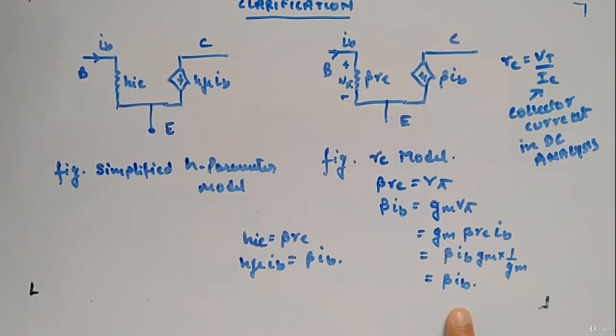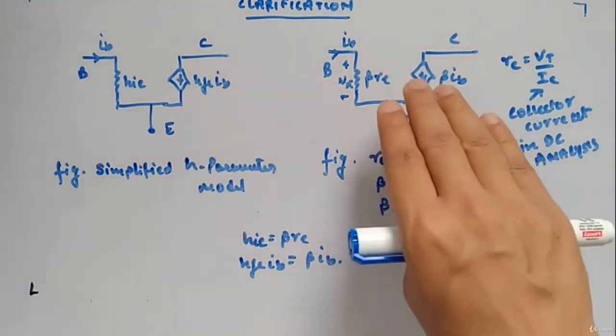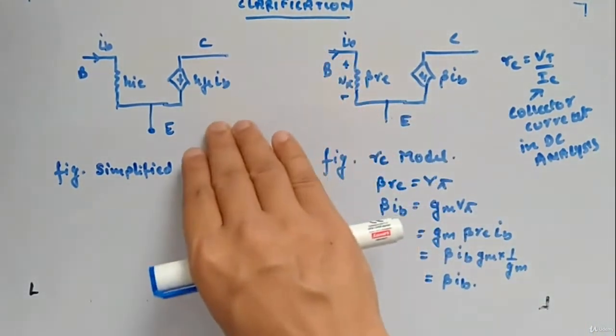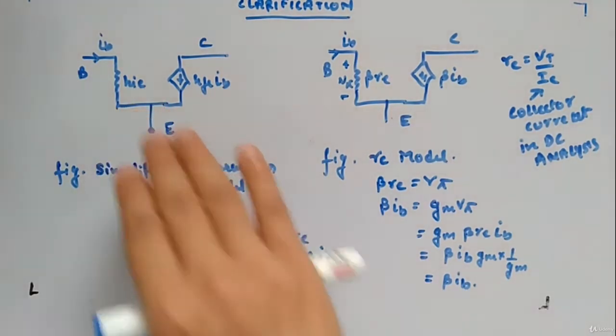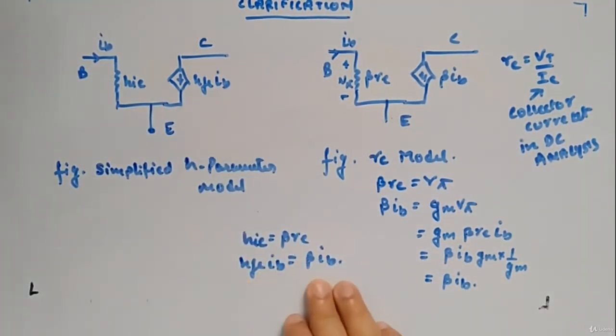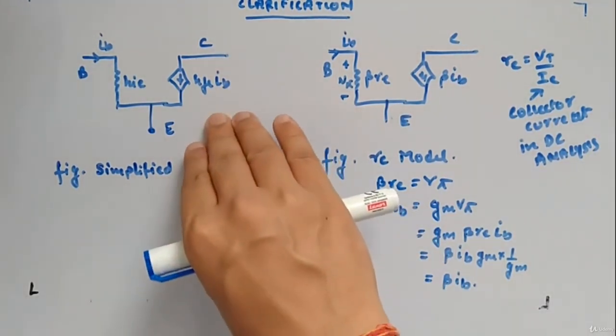This is about re model. Now the clarification is they both are the same. So hie is beta re and hfe ib is beta ib.